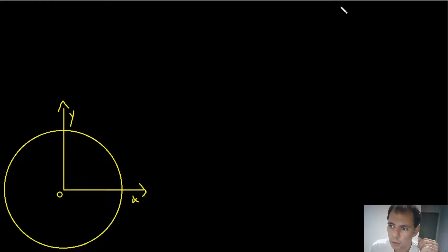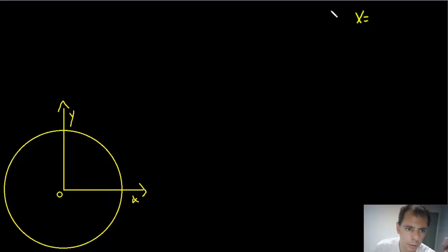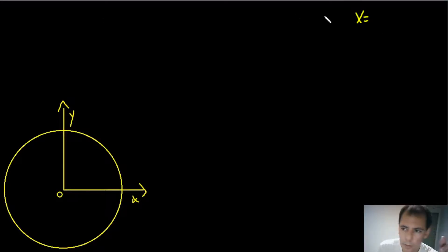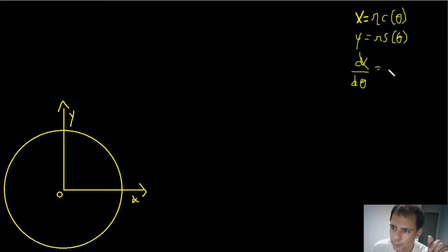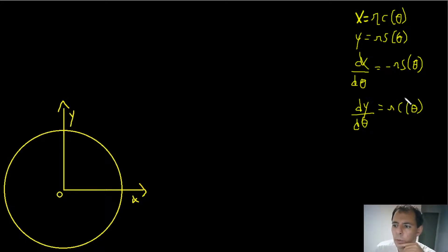From experience, I know I need to relate X and Y to the parameter theta. So: X equals R cosine of theta, Y equals R sine of theta. Then dX/dθ equals negative R sine of theta, and dY/dθ equals R cosine of theta.